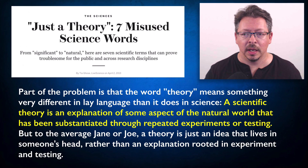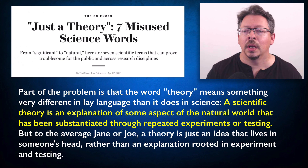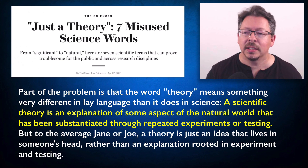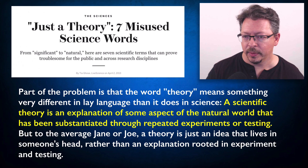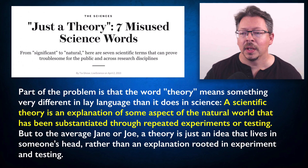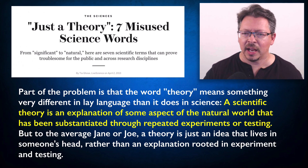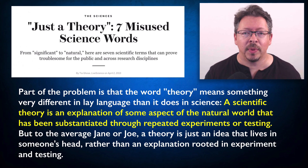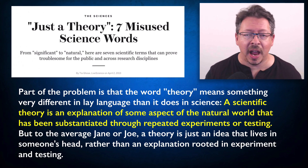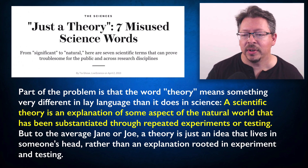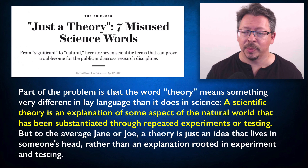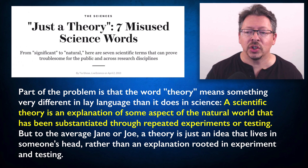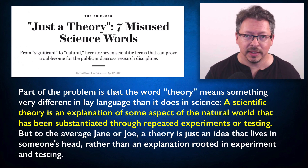But look at the next paragraph — again, this is a quote from the article. 'Part of the problem is that the word theory means something very different in lay language than it does in science. A scientific theory is an explanation of some aspect of the natural world that has been substantiated through repeated experiments or testing. But to the average Jane or Joe, a theory is just an idea that lives in someone's head rather than an explanation rooted in experiment and testing.'